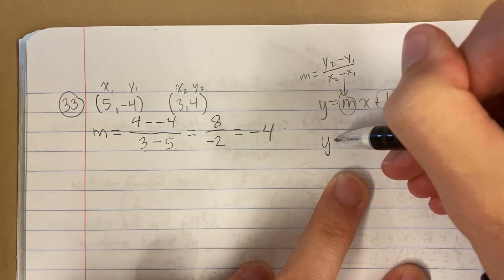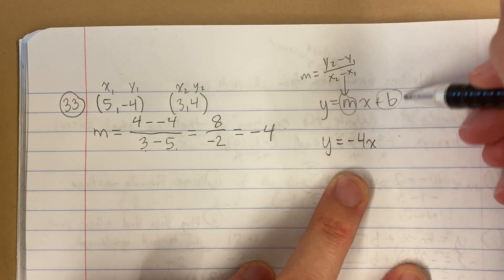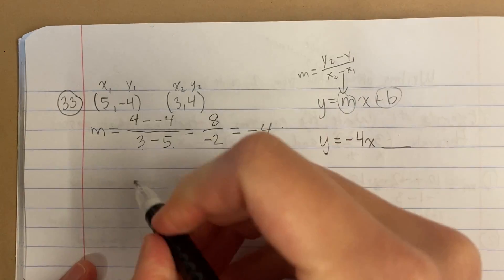So now I have my slope. I can even fill it in: y equals negative 4x. What I'm still missing is my b. So how do I find it?